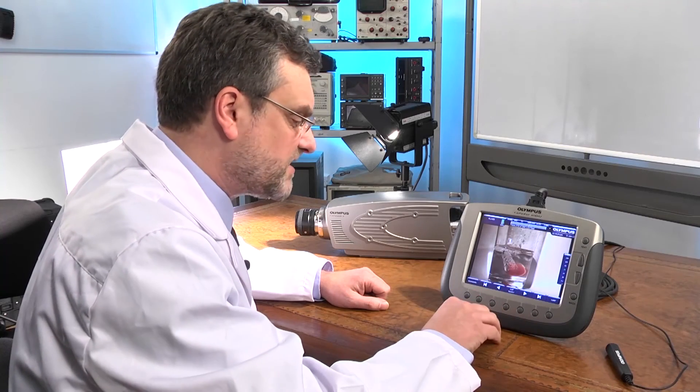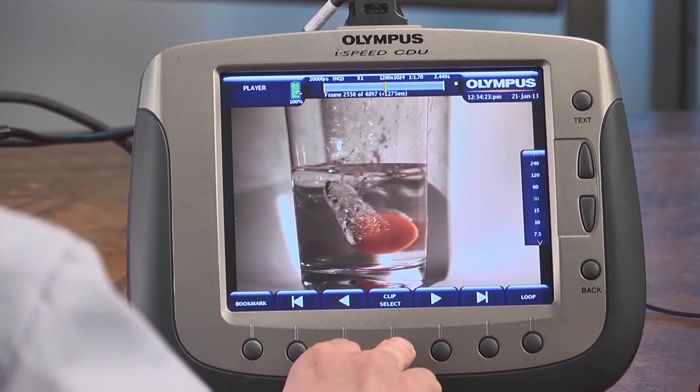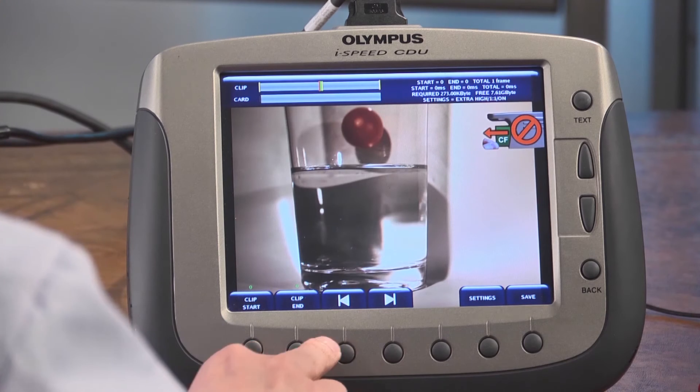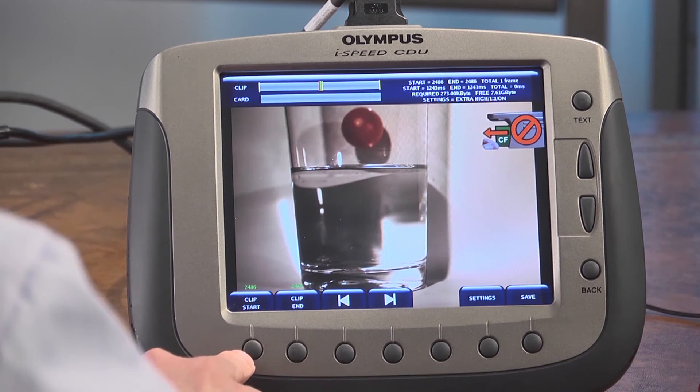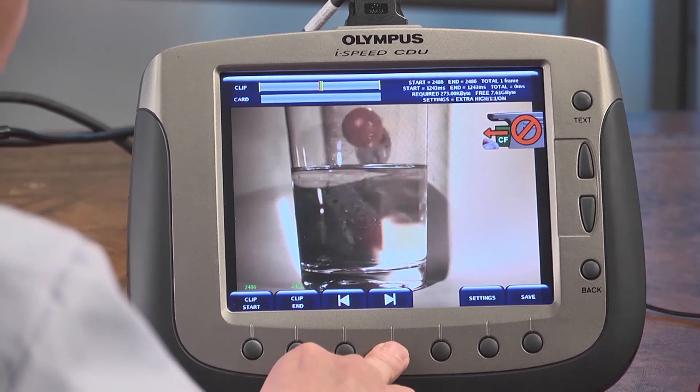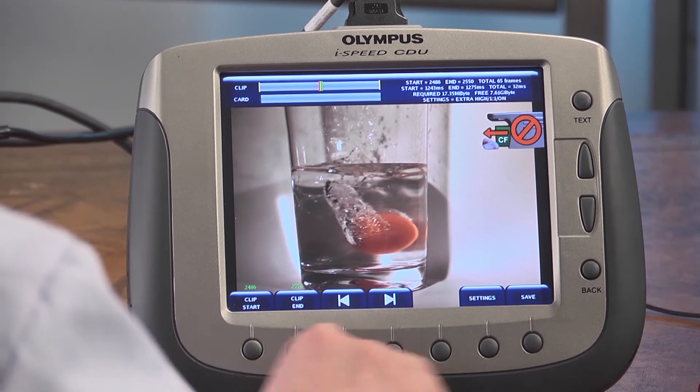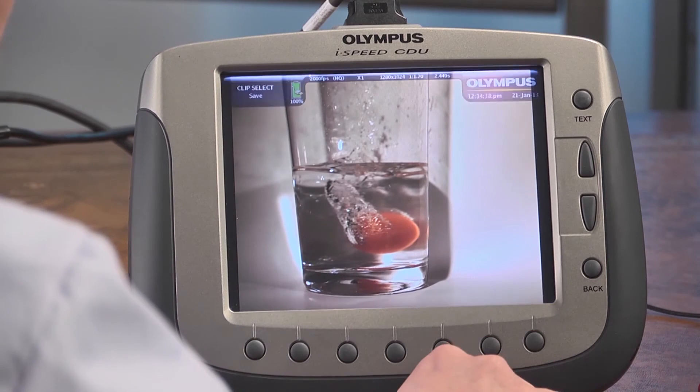Now I'd like to save that video onto a compact flash card. Let's press the clip select button. Let's move to the start of the event. I'll press clip start. Let's move to the end of the event and I can press clip end and then I can start the save process.